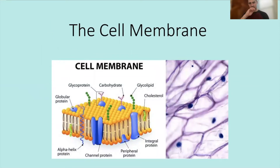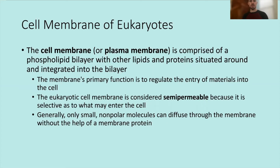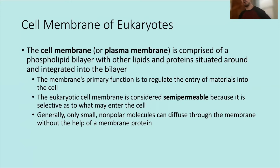We'll start by talking about the cell membrane — its structure and function. In eukaryotes, the cell membrane, also known as the plasma membrane, is comprised of a phospholipid bilayer with other lipids and proteins situated around and integrated into the bilayer. The membrane's primary function is to regulate the entry of materials into the cell. The eukaryotic cell membrane is considered semipermeable because it is selective as to what may enter.